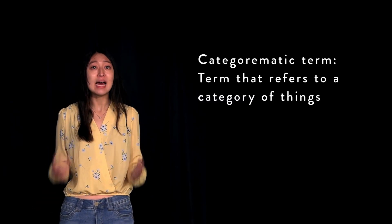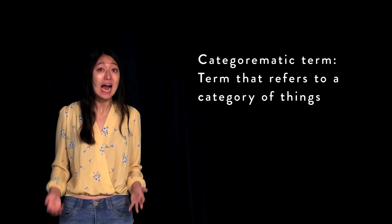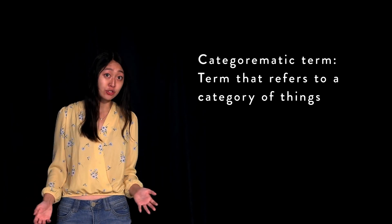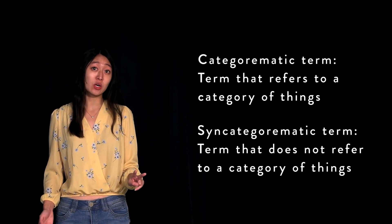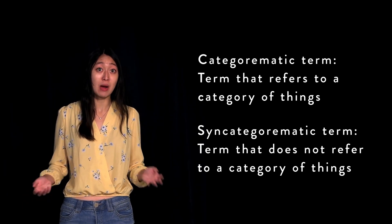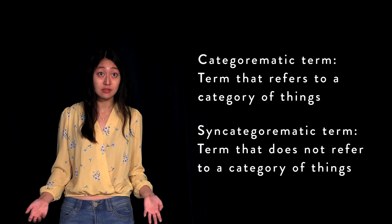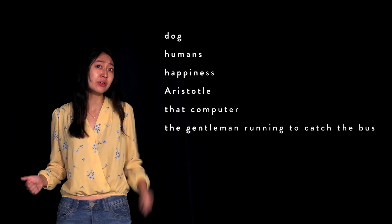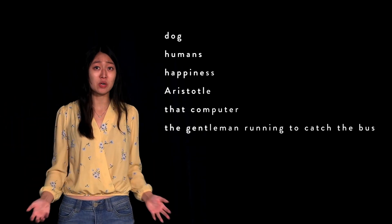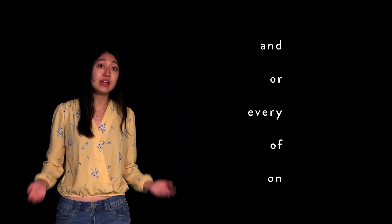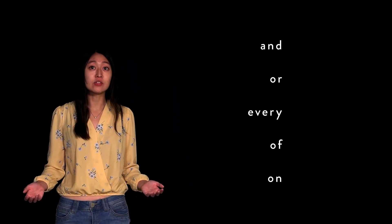A helpful distinction can be made between two types of terms. First are categorematic terms — these are terms that refer to a category of things in the world, terms that have a determinant meaning without surrounding terms, as in a proposition. Second are syncategorematic terms — these are terms that do not refer to a category of things in the world and require surrounding terms in a proposition for a determinant meaning to exist. For example, terms like dog, humans, happiness, Aristotle, that computer, or the gentleman running to catch the bus are all categorematic terms. On the other hand, terms such as and, or, every, of, and on, as they stand by themselves, are syncategorematic.